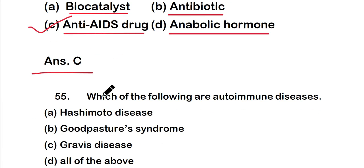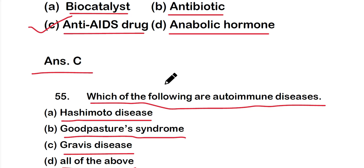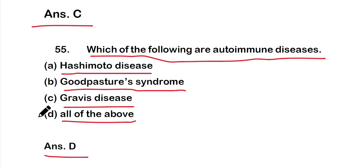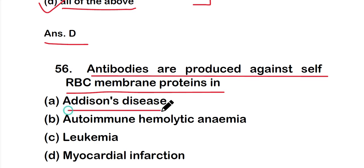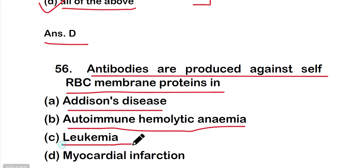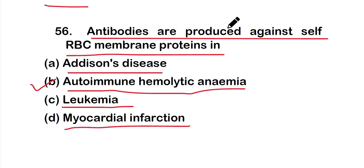Question 55: Which of the following are autoimmune diseases? Option A Hashimoto's disease, option B Goodpasture syndrome, option C Graves' disease, or option D all of the above. The right answer is option D — all are autoimmune diseases. Question 56: Antibodies are produced against RBC membrane protein in option A Addison's disease, option B autoimmune hemolytic anemia, option C leukemia, or option D myocardial infarction. The right answer is option B — autoimmune hemolytic anemia.